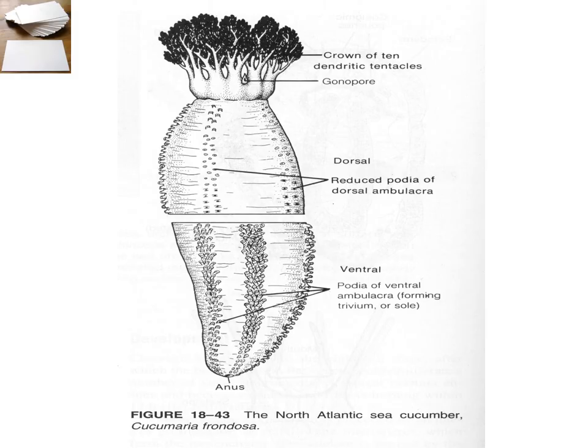Here are the modified buccal podia — modified feeding appendages. They have one little gonopore for broadcast spawning, or sometimes brooding eggs on the body externally.